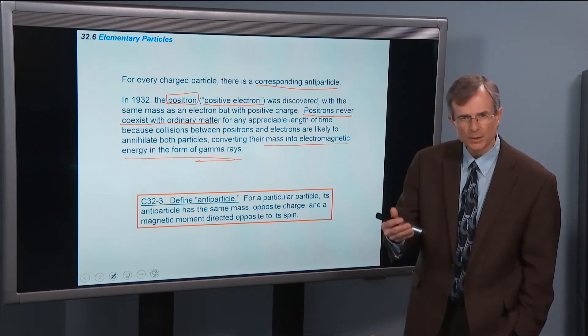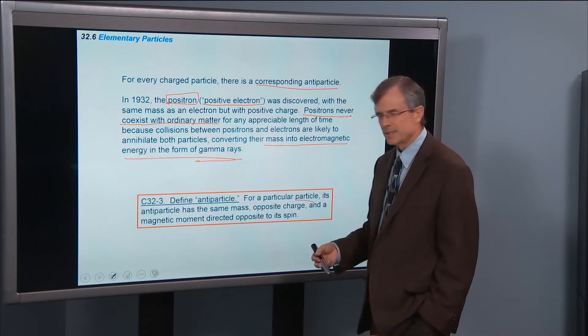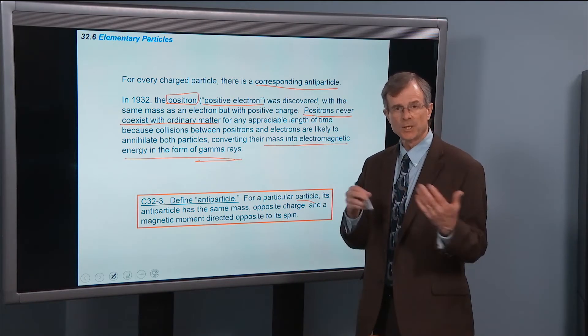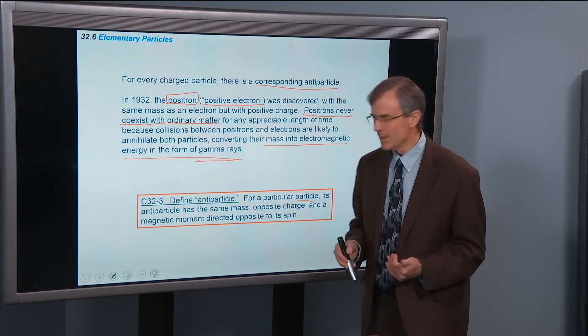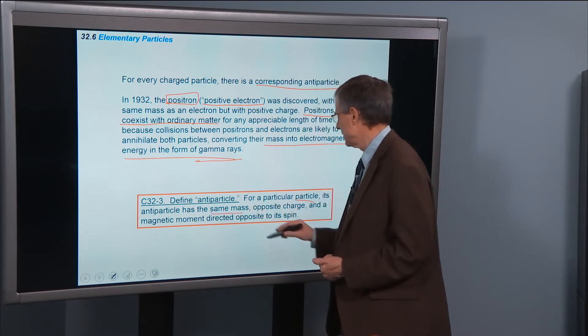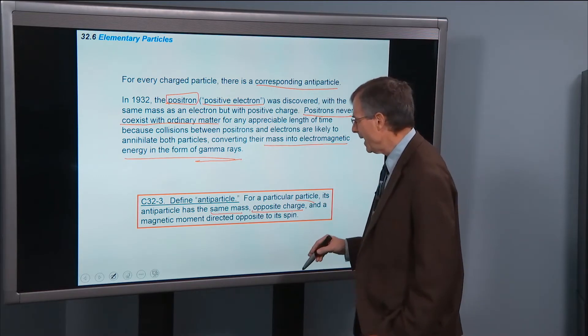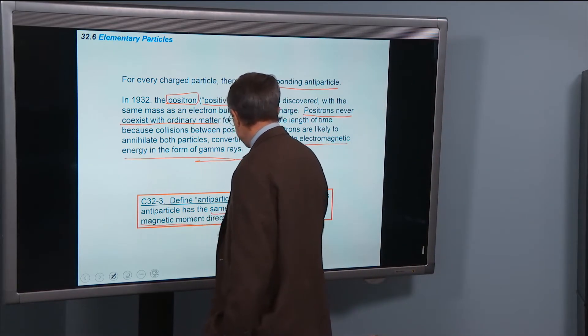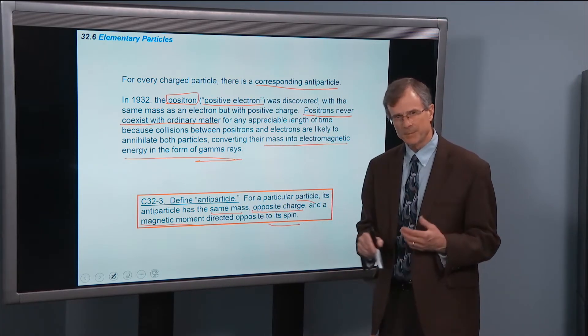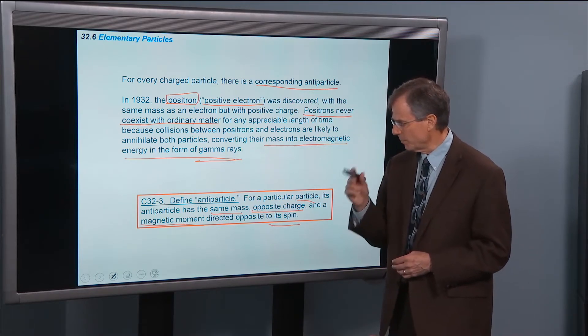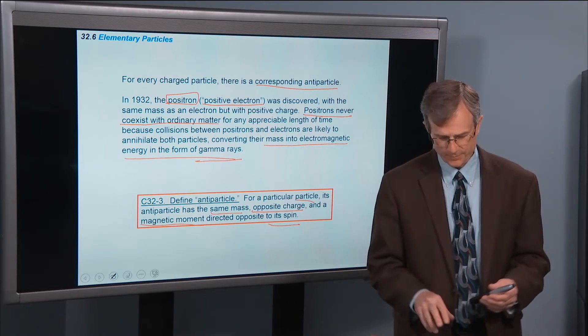So let's define an antiparticle. For a particular particle, such as an electron, its antiparticle has the same mass, 9.11 times 10 to the minus 31. It has the same mass, it has the opposite charge, so it's positive charge instead of negative. And it has a magnetic moment that's opposite to its spin.